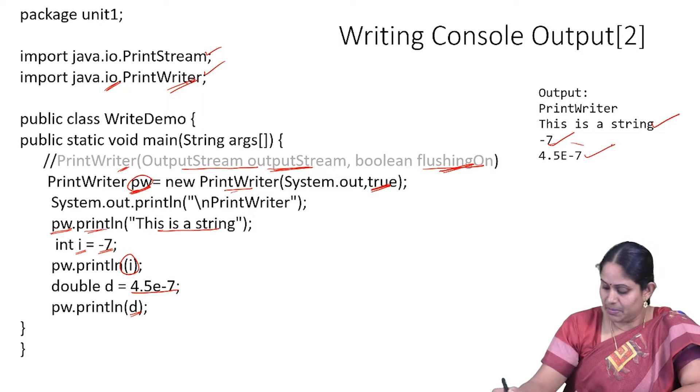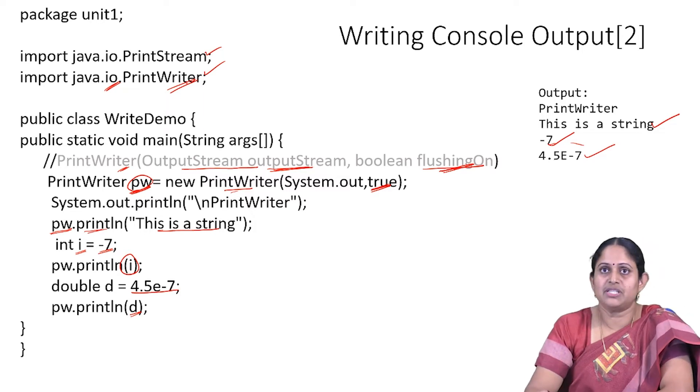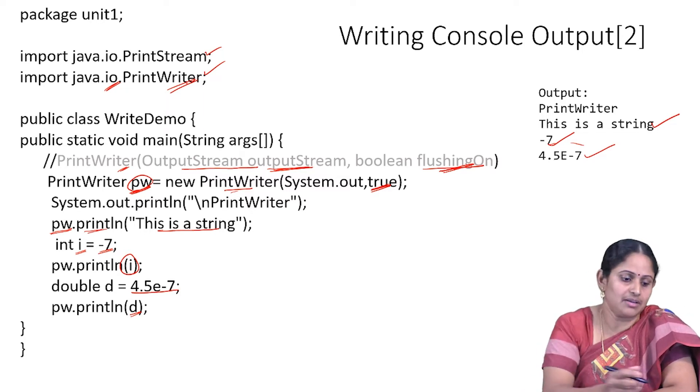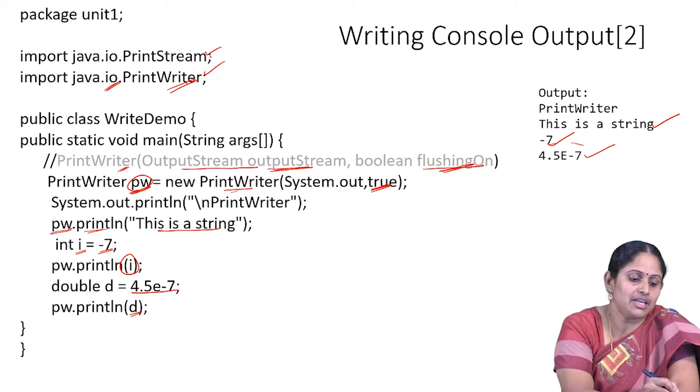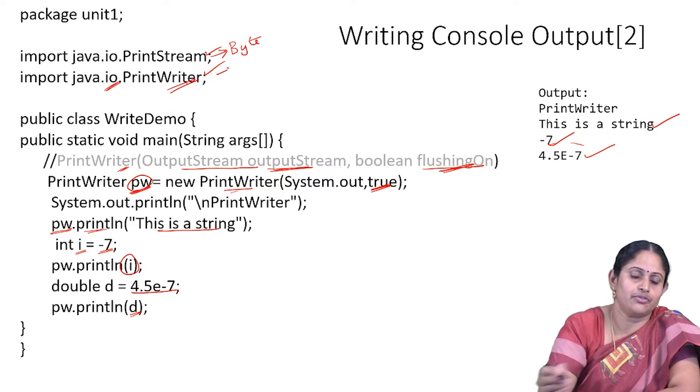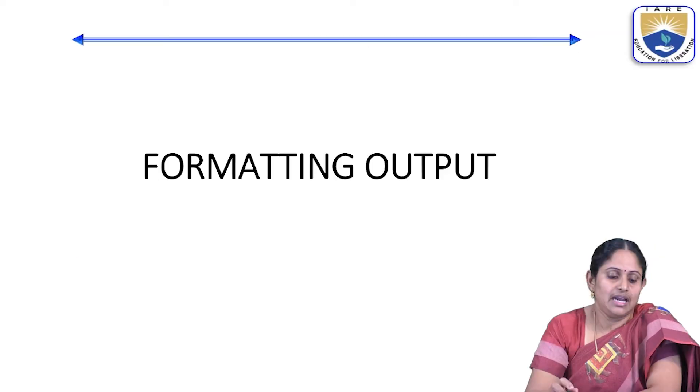The basic difference between PrintStream and PrintWriter is that PrintStream is mainly used for byte streams, whereas PrintWriter is used for character streams.